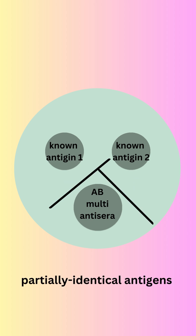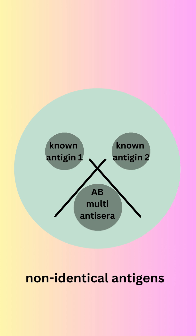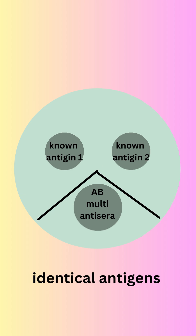Finally, the analysis. By observing the patterns of precipitin lines that form in the gel, scientists can determine the presence of specific antigens or antibodies in the test sample. The size and shape of the lines, as well as their position in the gel, can provide valuable information about the concentration and characteristics of the antigens or antibodies.